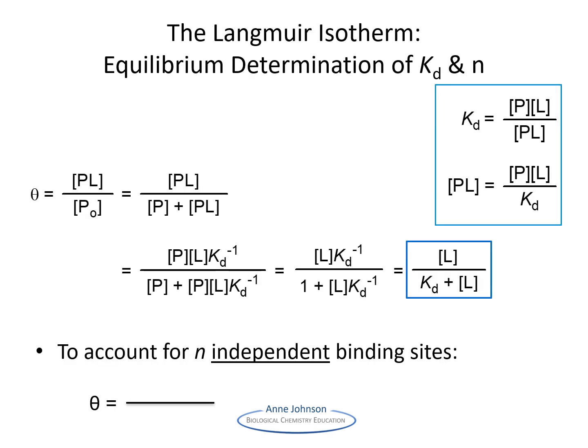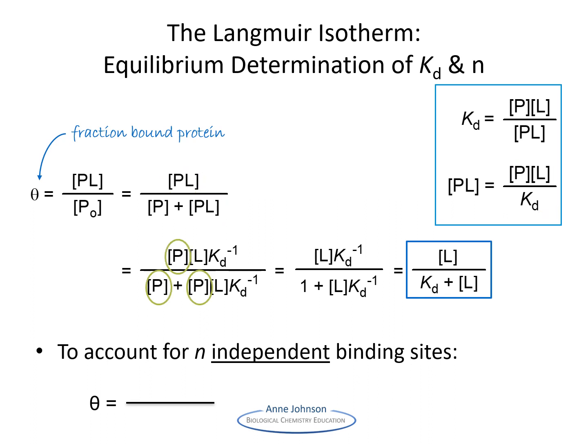Usually, we need to define Kd and N, where N is the number of binding sites for the ligand on the protein. In order to do this, we need to define the fraction of bound protein, the PL complex, as theta. We can rearrange the Kd expression to solve for PL and substitute this into the theta expression. We simplify this expression by dividing by P and multiplying by Kd. The resulting expression for theta, also known as the Langmuir isotherm, is good for one binding site.